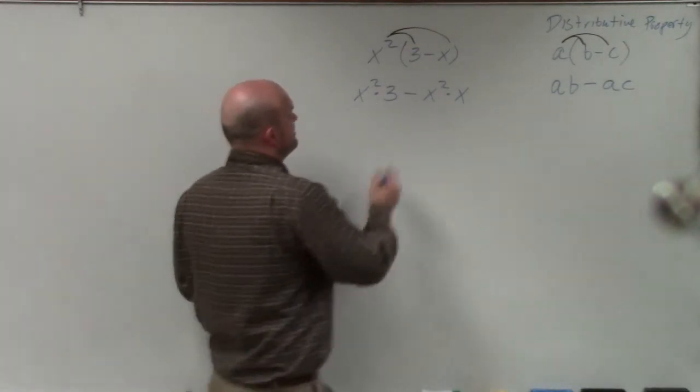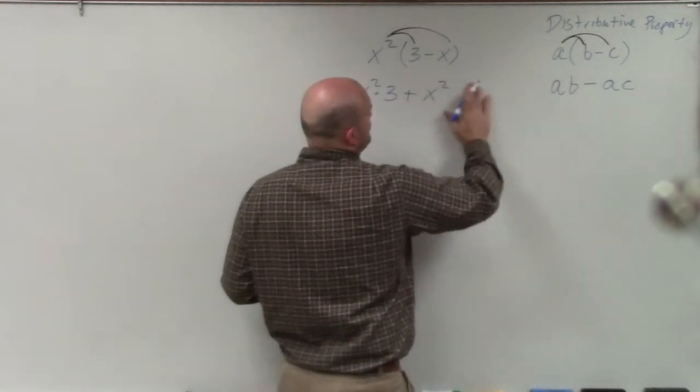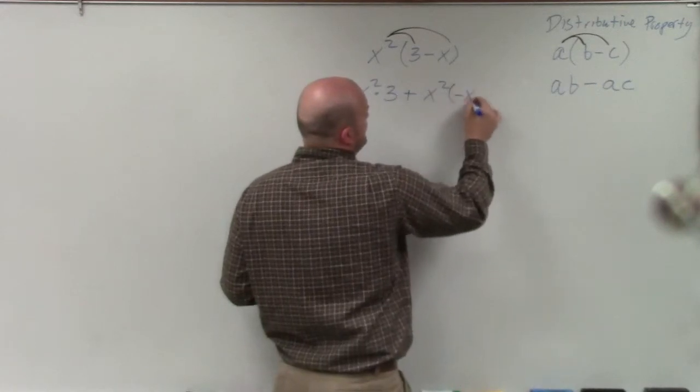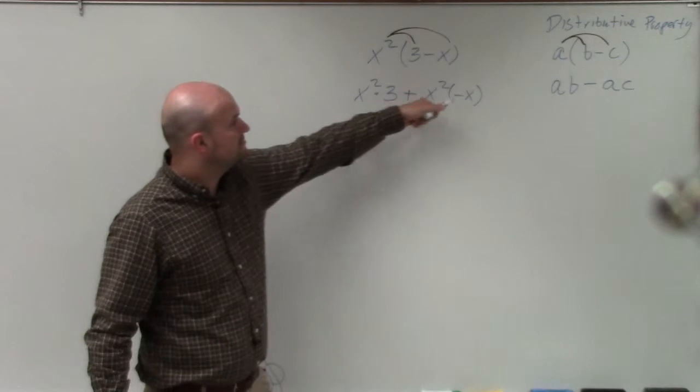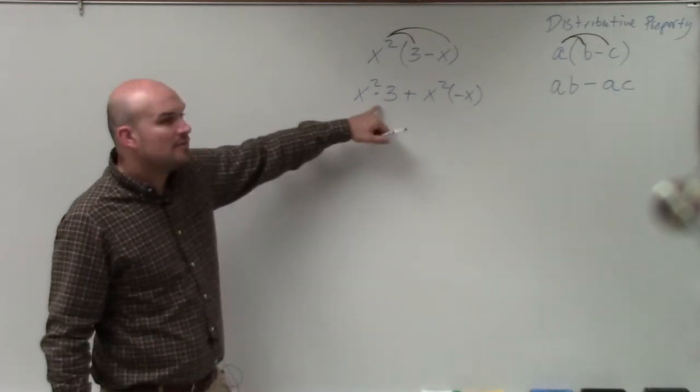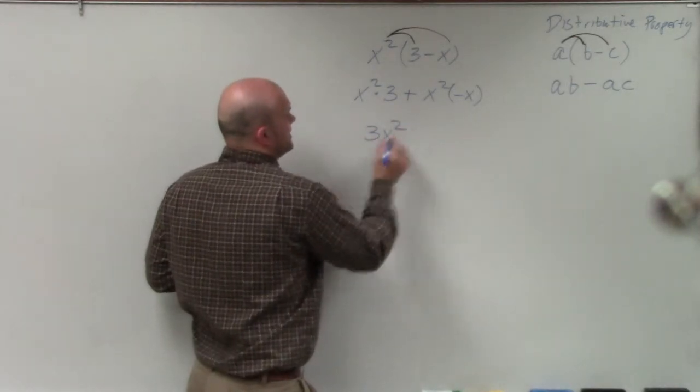Or really, that's a negative x. Let's write it that way, not to confuse you. That's a positive x times there. Now, 3 times x squared. I can't simplify that any further. So that becomes 3x squared.